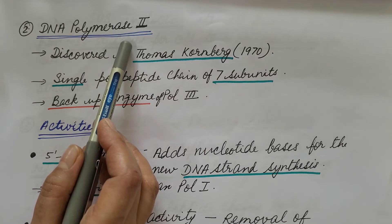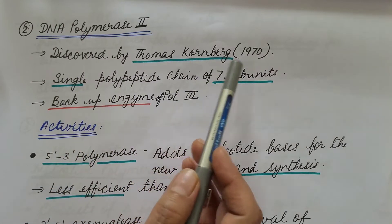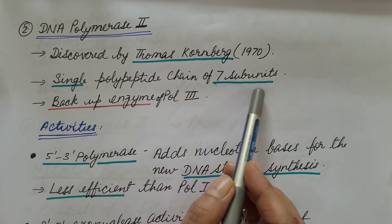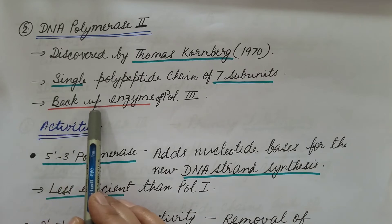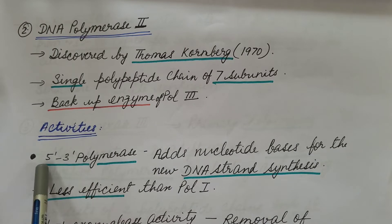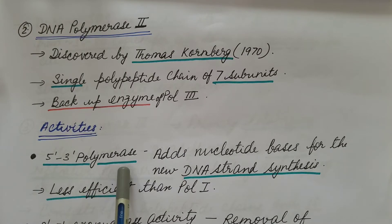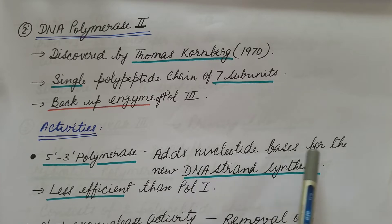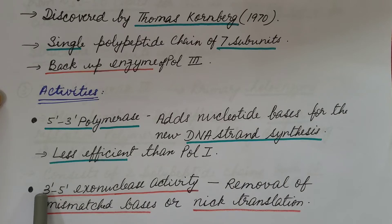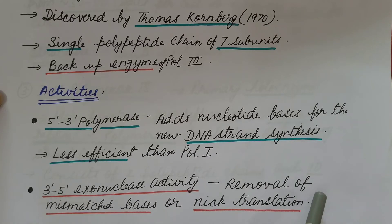Second is DNA polymerase 2. It was discovered by Thomas Kornberg in 1970. It is made up of a single polypeptide chain consisting of seven subunits. It is known as the backup enzyme for polymerase 3. Its activities include 5'→3' polymerase activity — adding nucleotide bases for new strand synthesis — though it is less efficient than polymerase 1. It also shows 3'→5' exonuclease activity for removal of mismatched bases or nick translation.